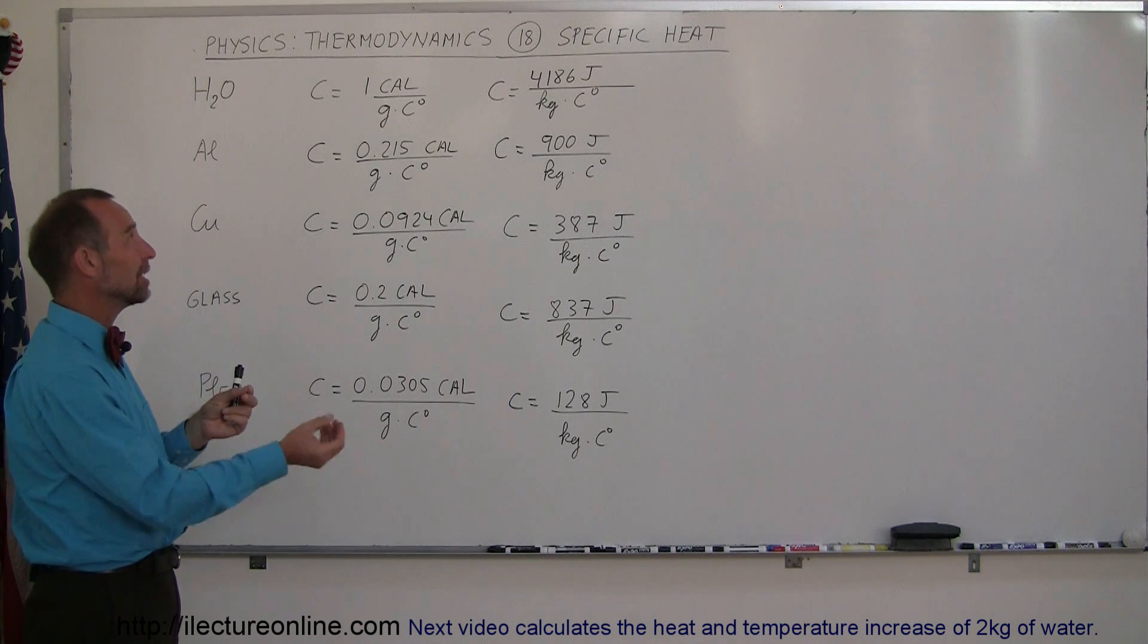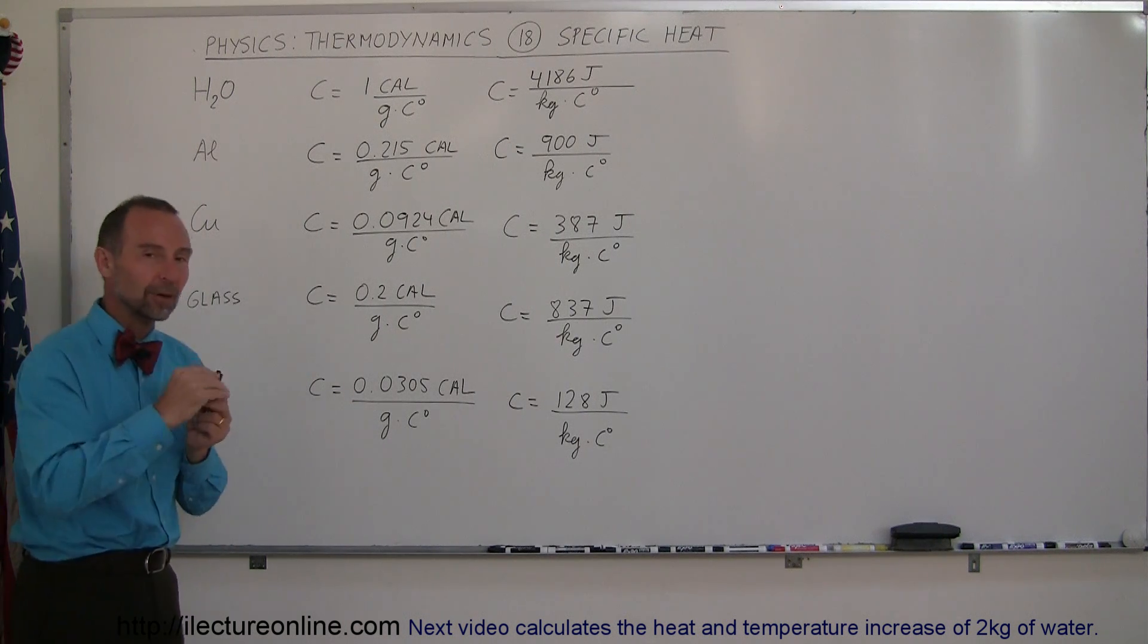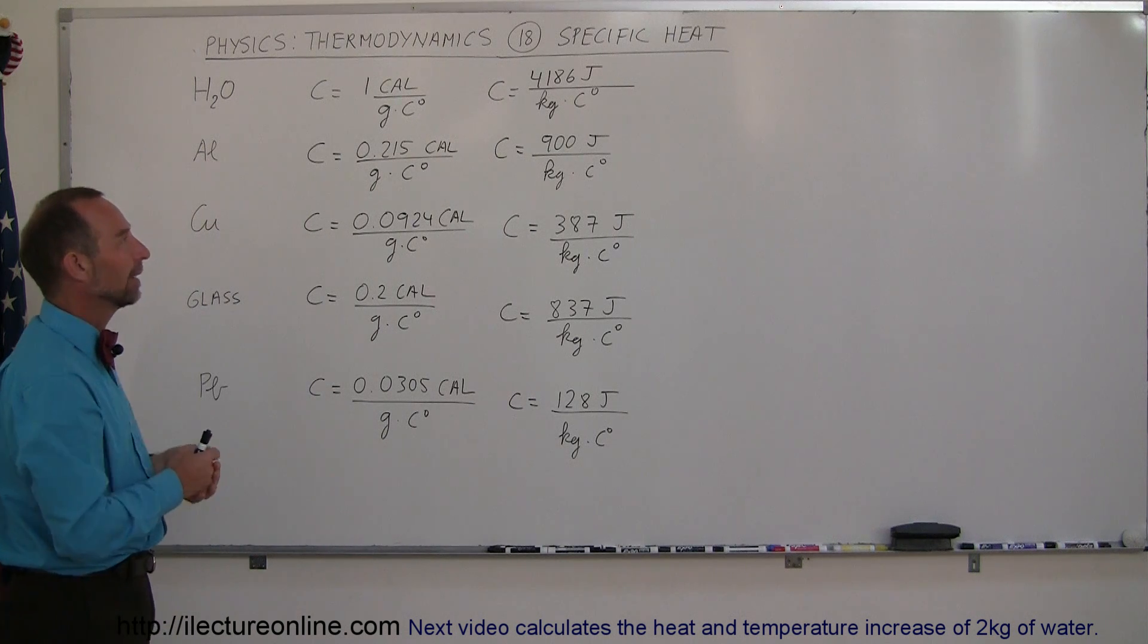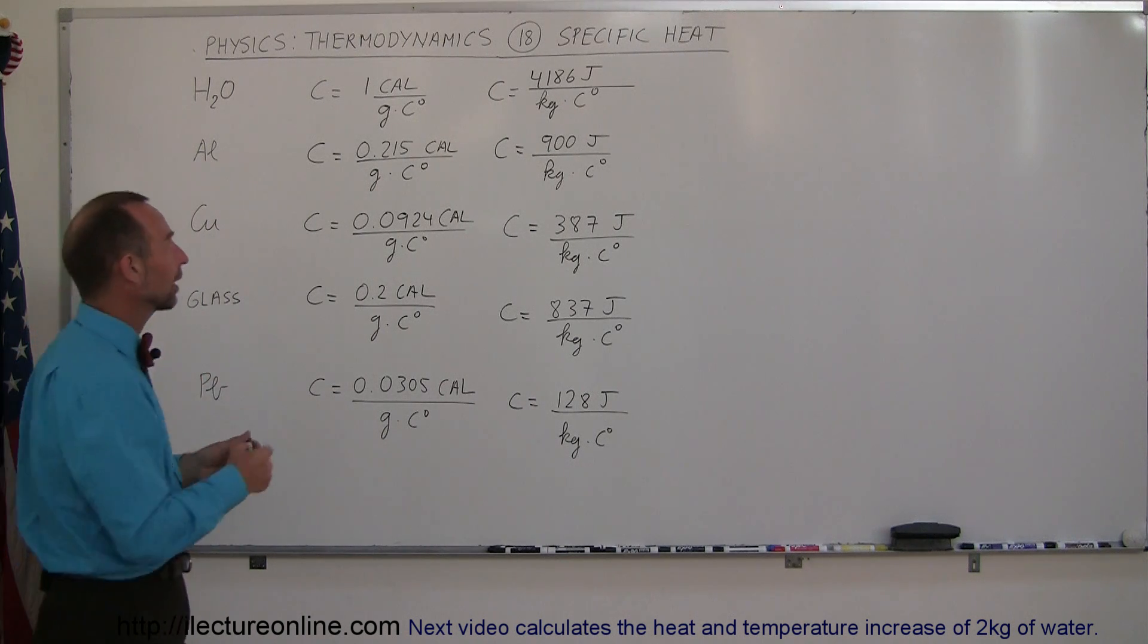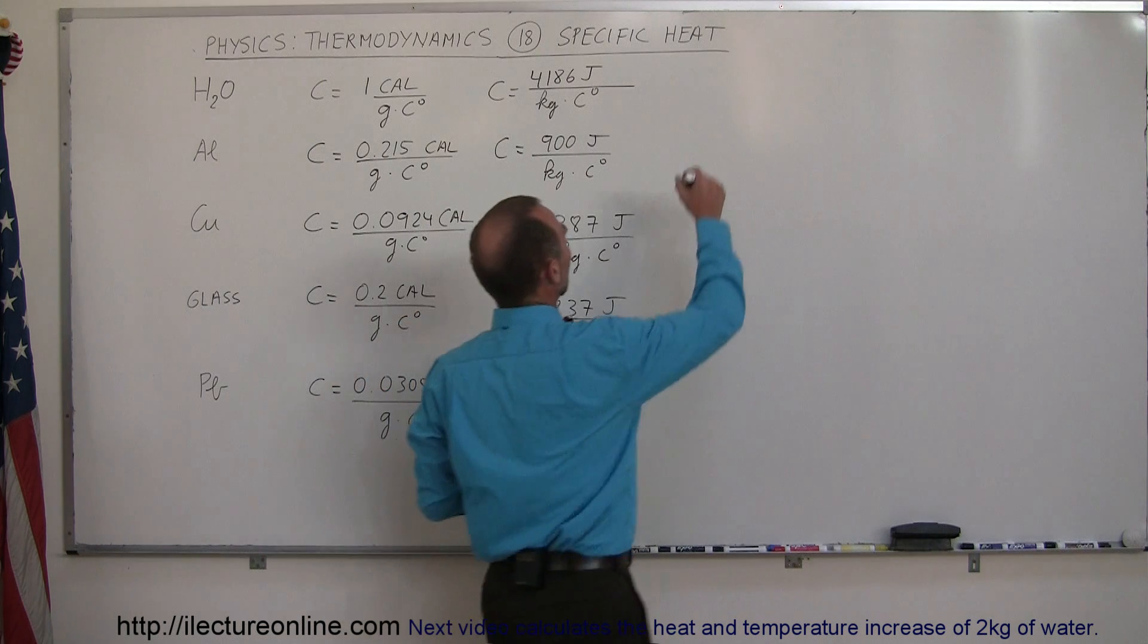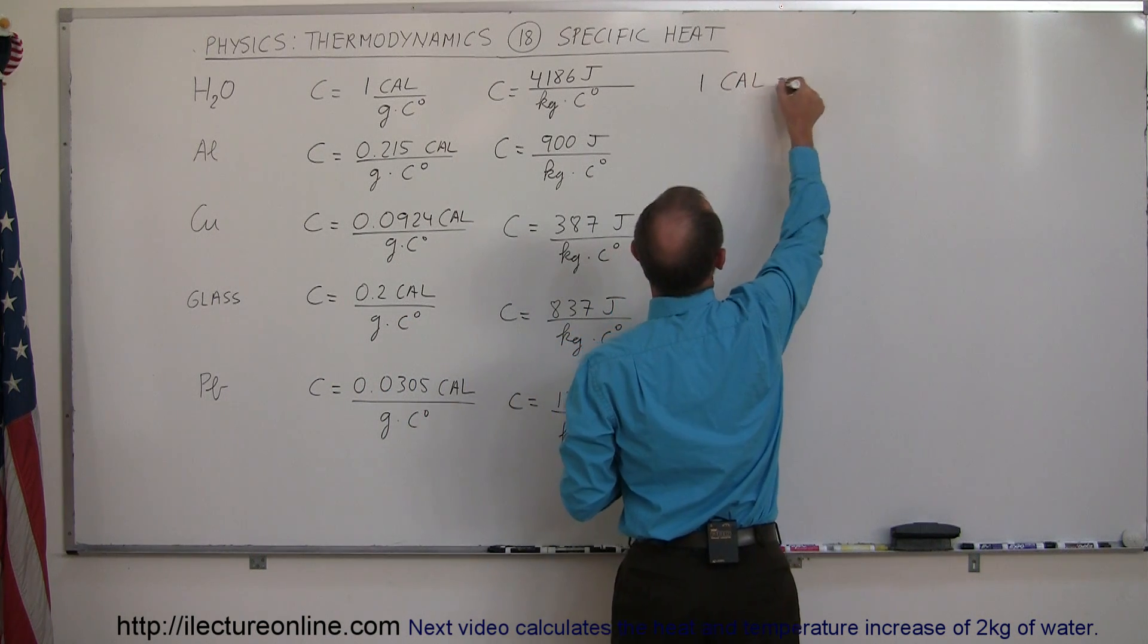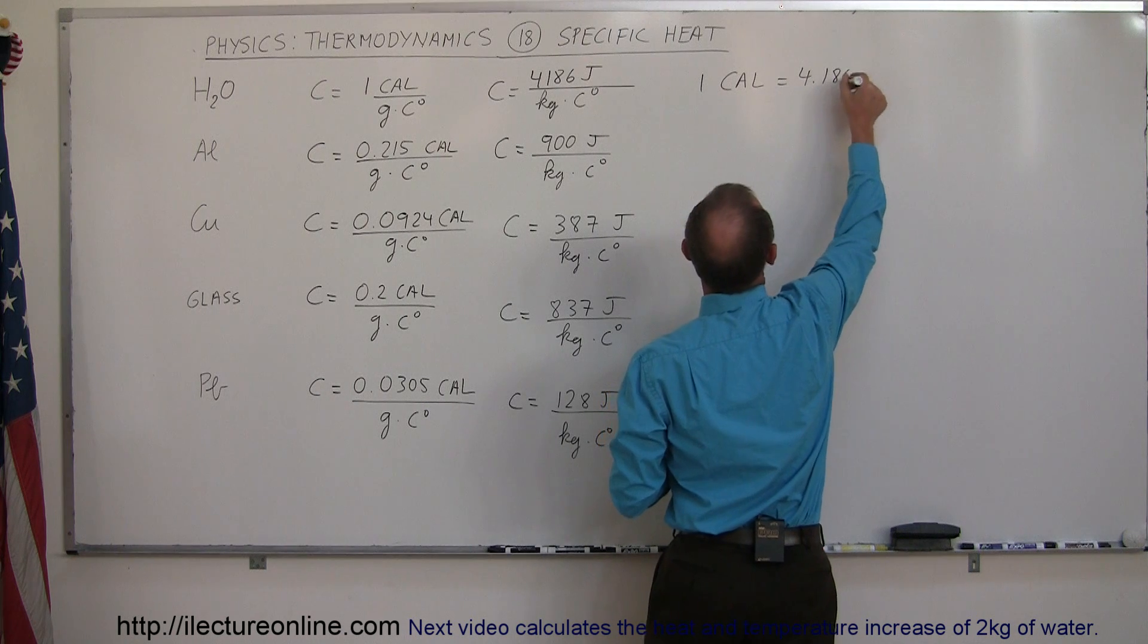We calculated how much heat you need to add to one gram of water to raise it by one Celsius degree and called that a calorie. When we compared that to joules, it turned out that one calorie equals 4.186 joules.